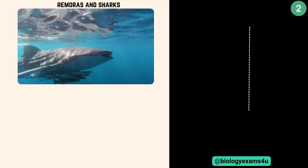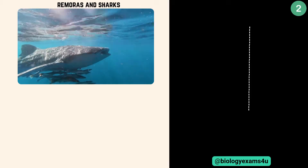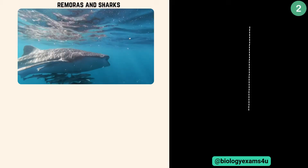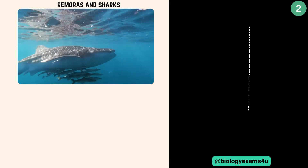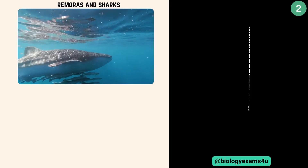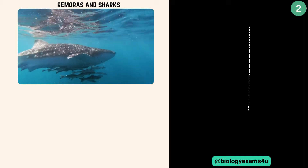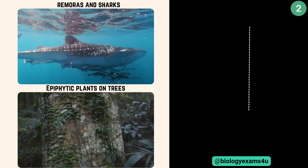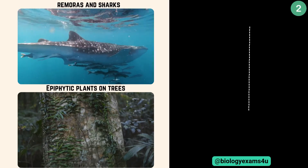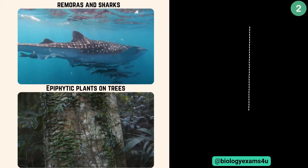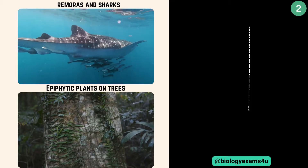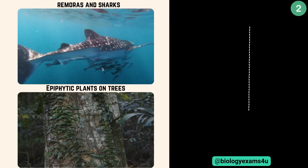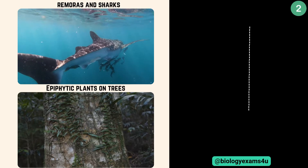These remoras and sharks — remoras attach to sharks for transportation and feeding on leftover scraps. The second example is epiphytic plants on trees. Plants like orchids grow on trees to access sunlight without harming the tree.